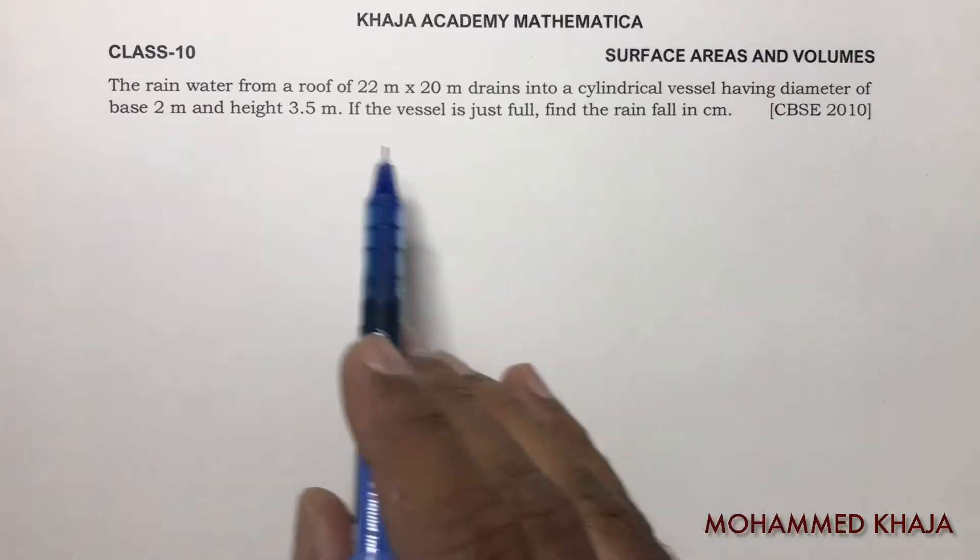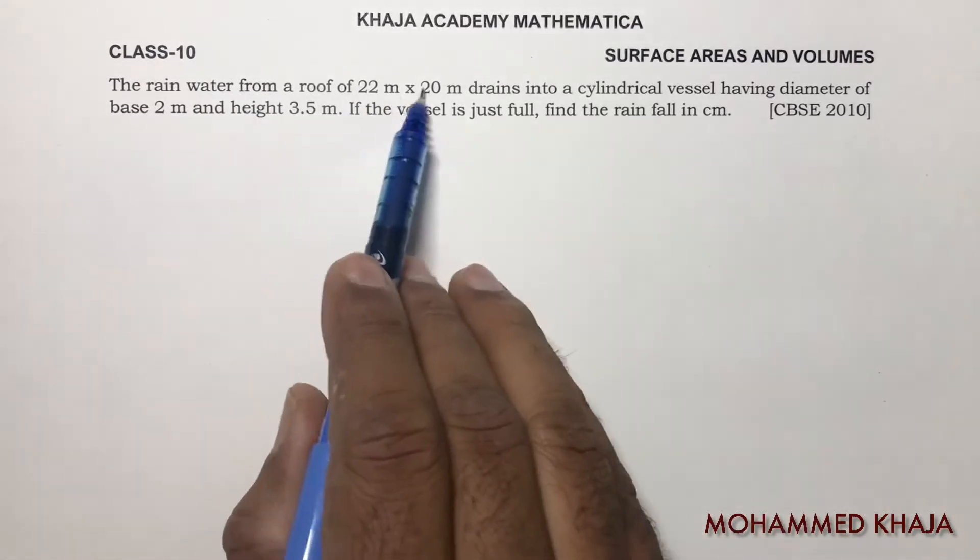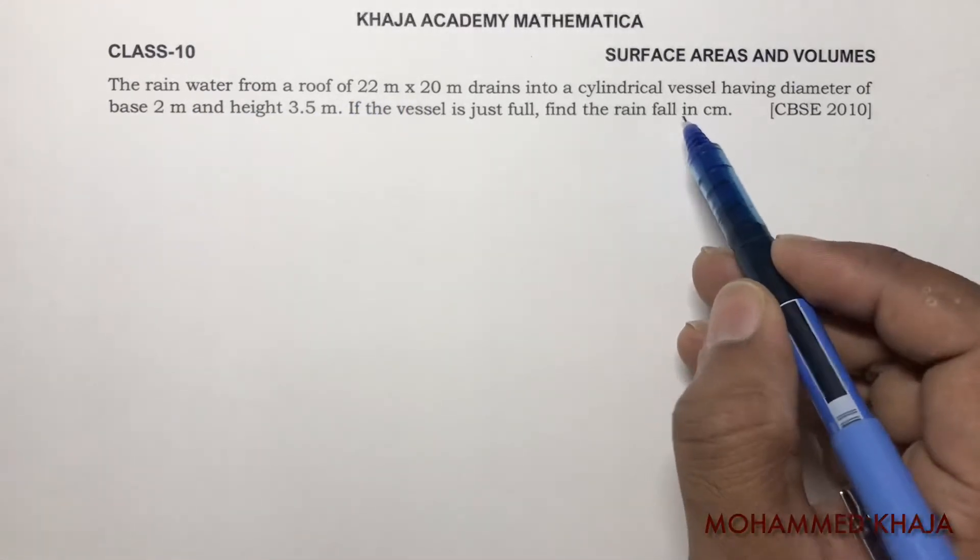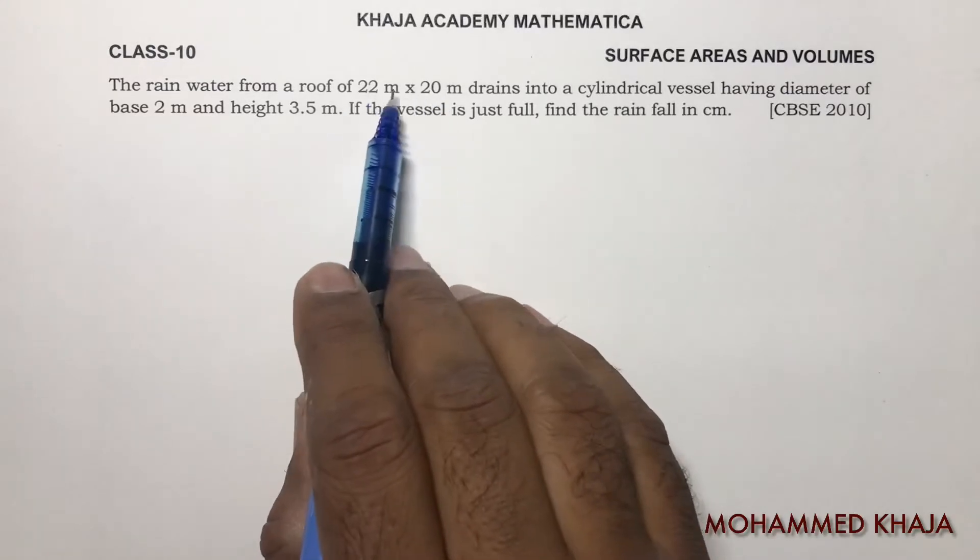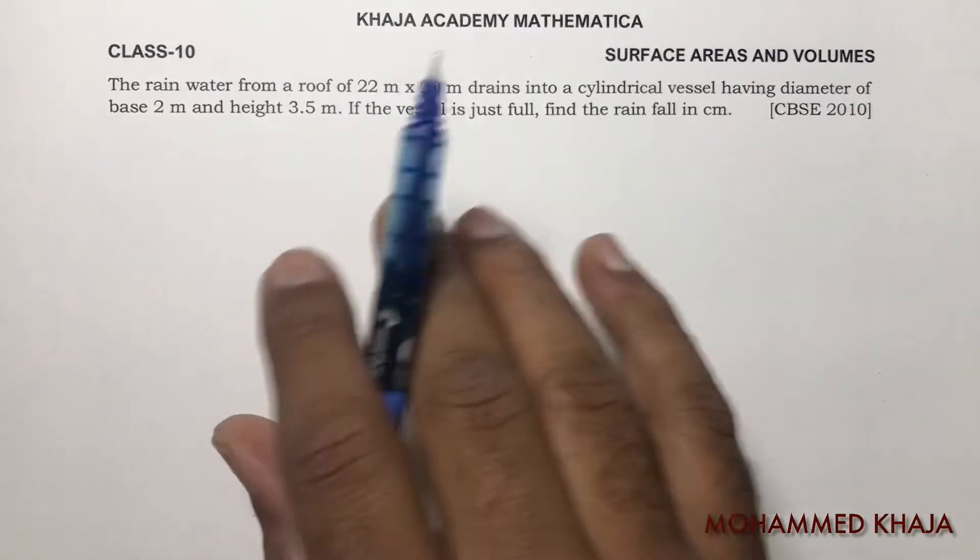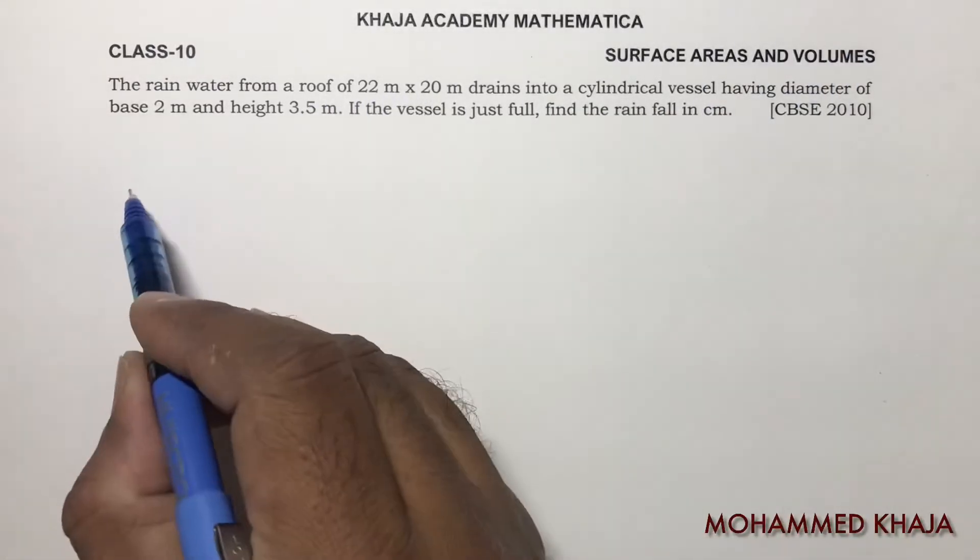Rainfall in centimeters means we need to find the height of the cuboid. I'll consider the rainfall which is on the roof. The roof I'll take in the shape of a cuboid.